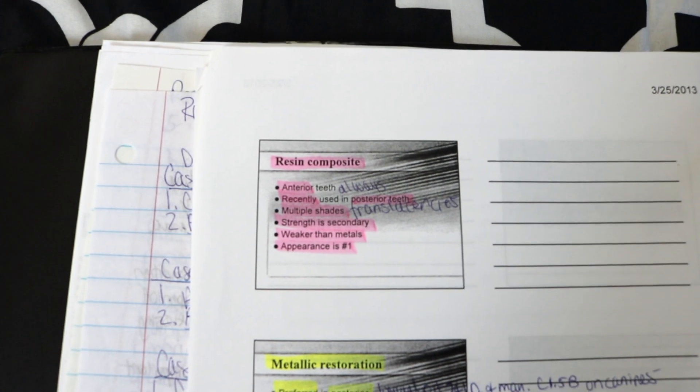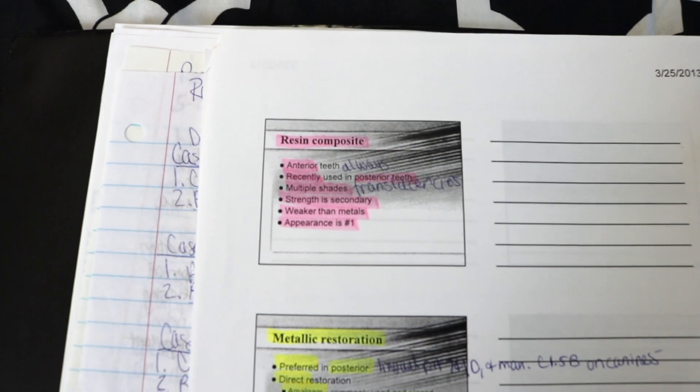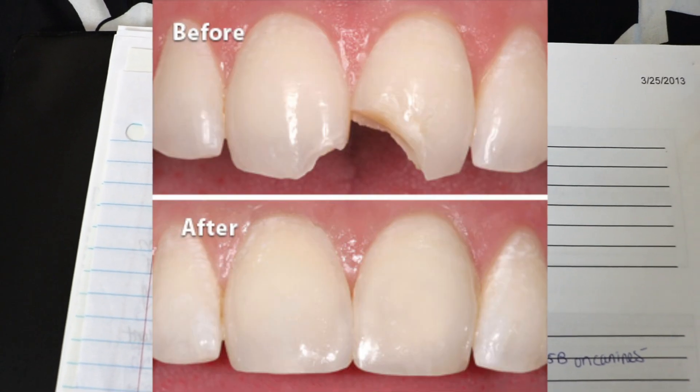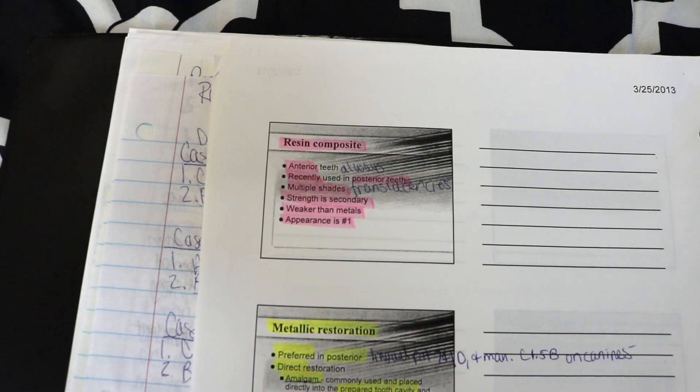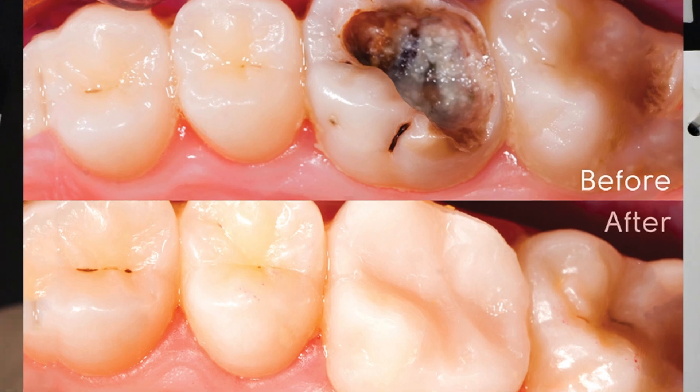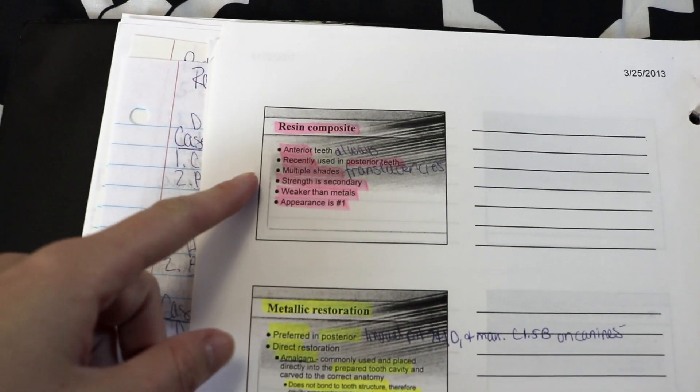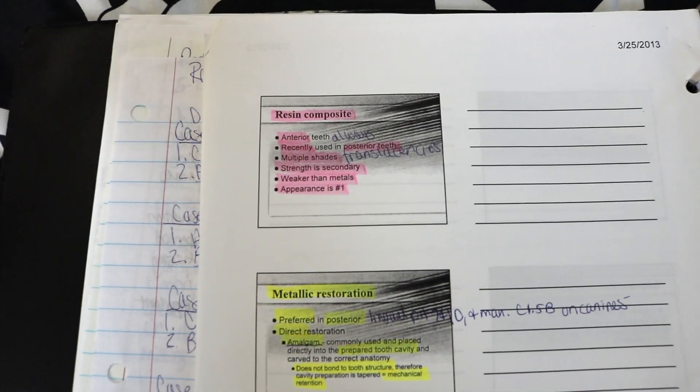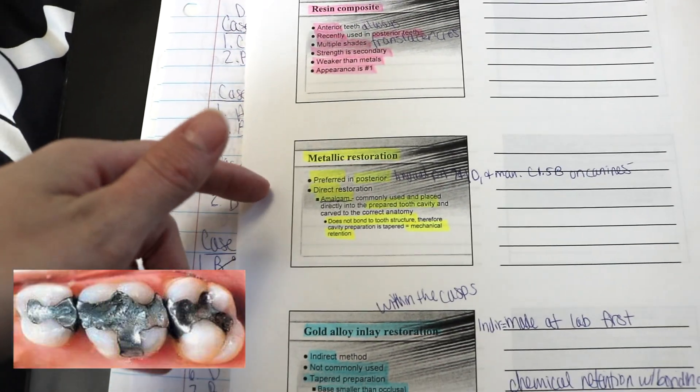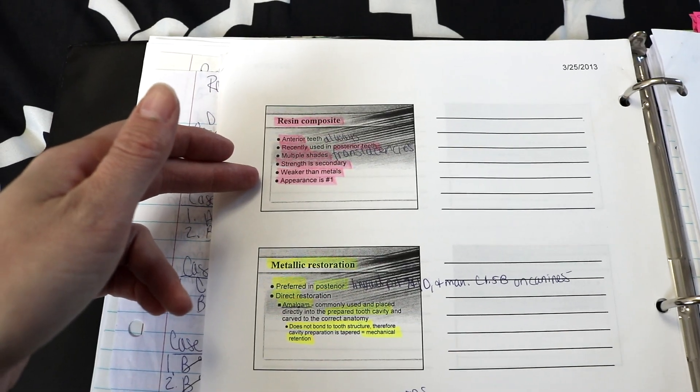So a resin composite is the white colored fillings, the tooth colored fillings that you see. Of course we always use these in anterior teeth which are your front teeth but we definitely have been starting to use them in the back teeth a lot more frequently. This actually is the only thing that any doctor that I've worked for recently even uses, we don't even have the amalgam restorations which are the metallic ones, the silver fillings. This is so much more commonly seen.